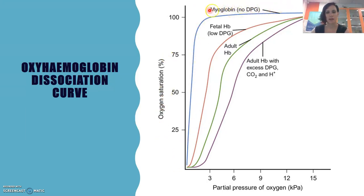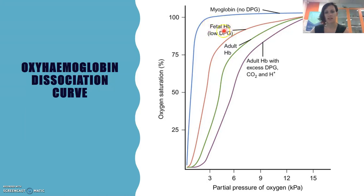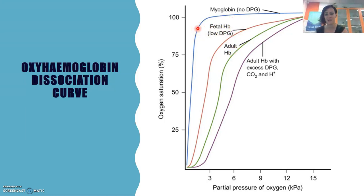Myoglobin will grab onto anything because those muscles need so much energy, and without oxygen, cellular respiration is not effective. Fetal hemoglobin has a very high affinity for oxygen — less than myoglobin but more than adult hemoglobin — because it's really competing with the mother. The fetus essentially needs to grip onto any oxygen coming across that placental membrane. Adult hemoglobin still has quite high affinity, but it faces challenges from other factors.